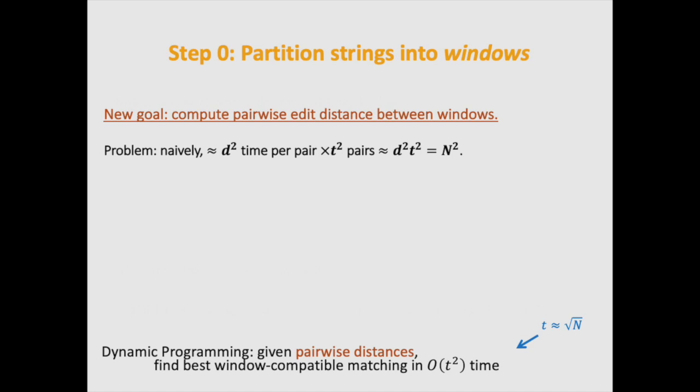That is, we have a new goal of computing pairwise edit distance between windows. The problem is, is that naively there's d squared time is needed to compute between pairs, and there's t squared pairs total, which gives an n squared time algorithm.